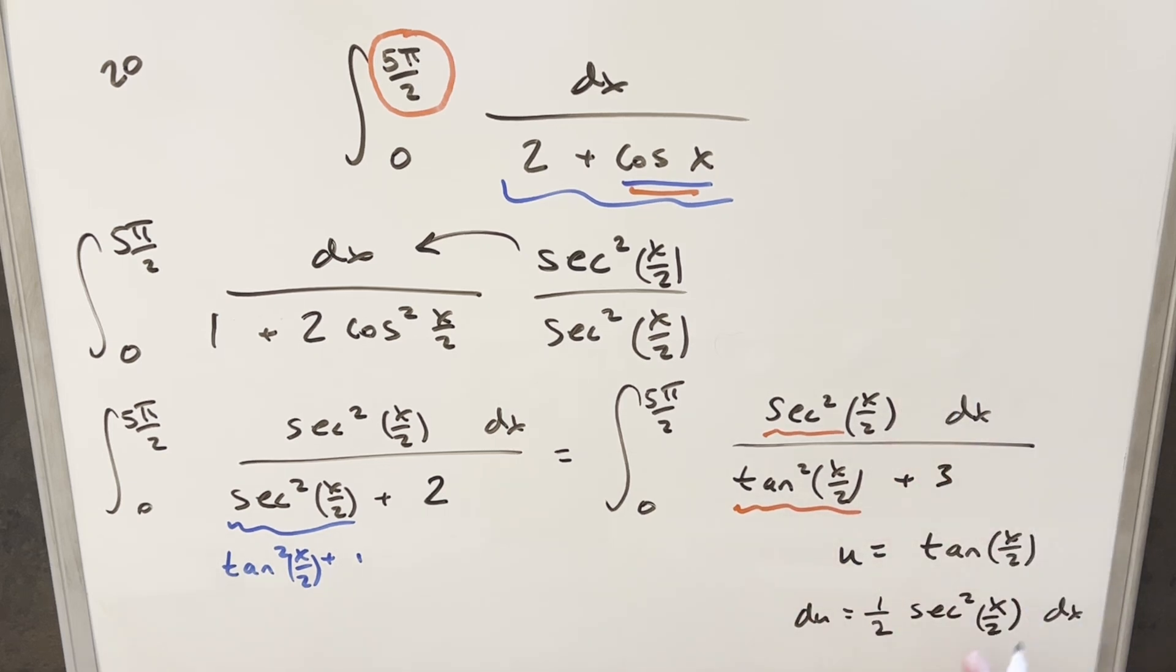Coming back to our problem, I want to set up this numerator to be exactly this. So what I'll do is I'll multiply here by 1 half, but I don't want to change it, so we'll multiply by 2 in front. And then at this point, this is where the 5π over 2 is going to rear its ugly head and cause those problems.